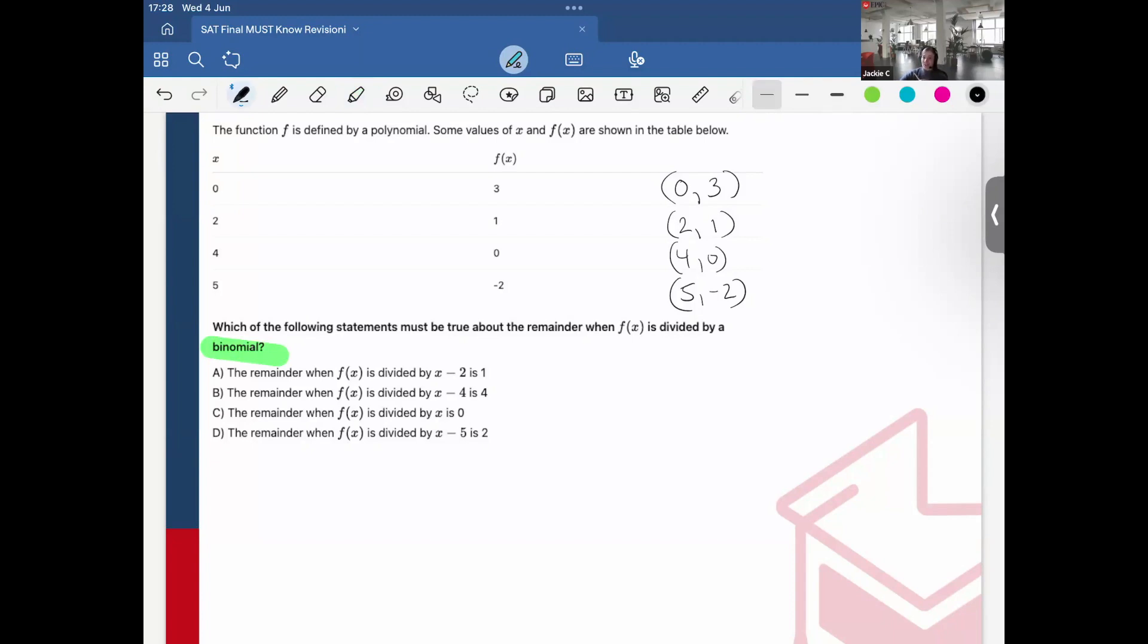it's going to give me the y output. So this is that x minus 2 is like when I plug in x equals 2, the output should be y equals 1. And this would be the remainder. Do I have a match of (2, 1)? Lo and behold, yes.